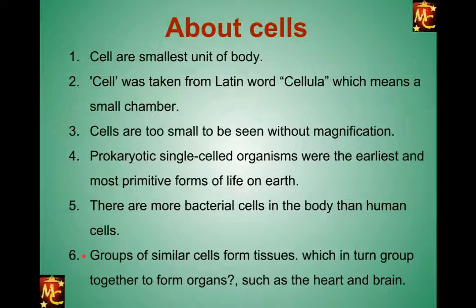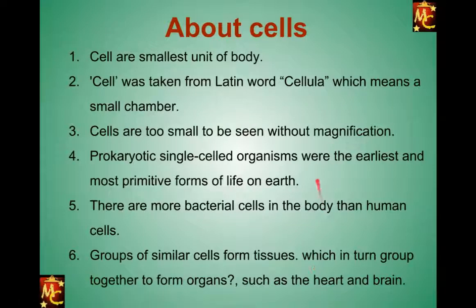A group of similar cells forms tissue. We have several organs like liver, heart, and muscles, and each organ has many cells. Individual organisms have cells that work for different kinds of activities. The collection of individual types of cells is known as tissue. Groups of similar cells, known as tissues, then group together to form organs such as the heart, brain, or liver.